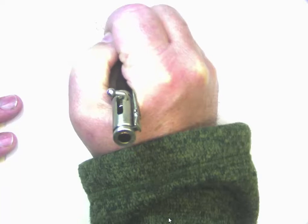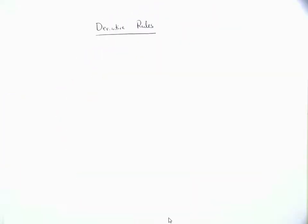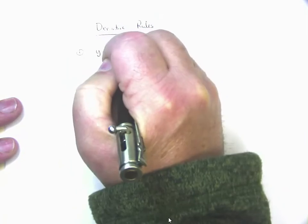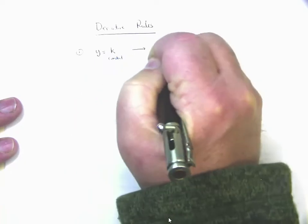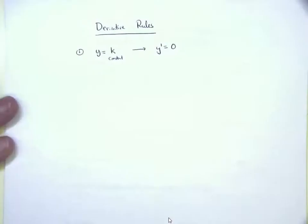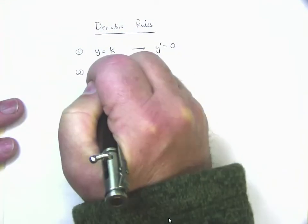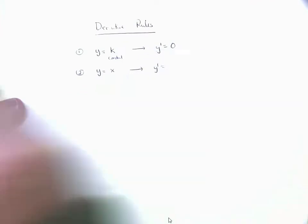Through mathematical analysis we've discovered patterns for taking derivatives. Here are the derivative rules you need to know. Rule 1: if y equals a constant k, then y′ = 0 — the derivative of any constant is zero. Rule 2: if y = x, then y′ = 1. Rule 3: if y = kx (a constant times x), then y′ = k — for example, the derivative of 5x is 5, of −7x is −7.